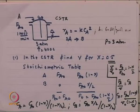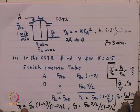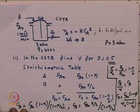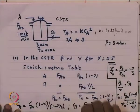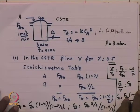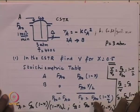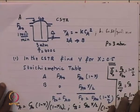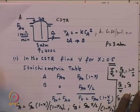We now look at an illustrative exercise to understand how we can apply the design equations we have derived. The problem involves a CSTR with component A entering and reacting via 2A → B (a dimerization). The rate function RA is minus K·CA². The rate constant k is 60 liters per gram mole per minute. The reactor operates at 3 atmospheres and 400°C. We need to find the volume for a conversion of 0.5.